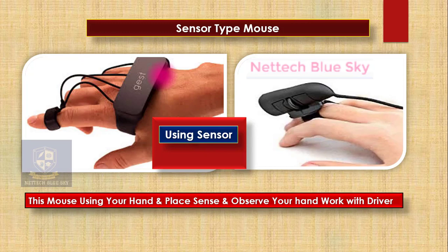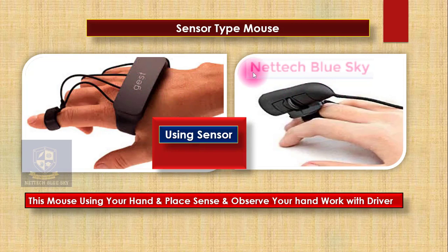On the left side you can see the wireless system, and on the right side you can see the wired sensor type mouse. The sensor means it automatically observes your system.